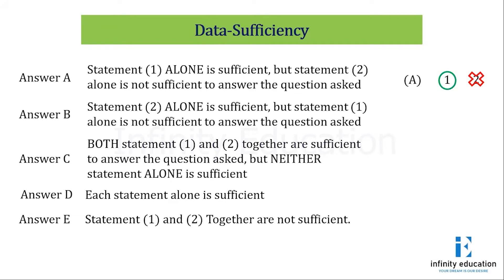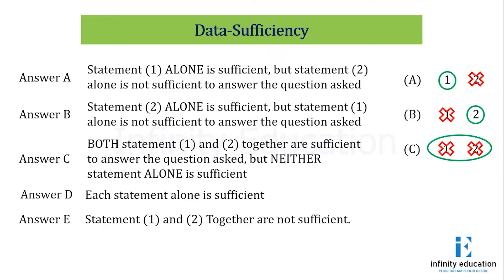A should be the answer when 1 is sufficient and 2 is insufficient — that's why I have circled the sufficient one in green and crossed out the insufficient one in red. B should be the answer when 1 is insufficient and 2 is sufficient. C should be the answer when 1 and 2 together are sufficient but individually they are insufficient. D should be the answer when individually they are insufficient and together also they are insufficient.